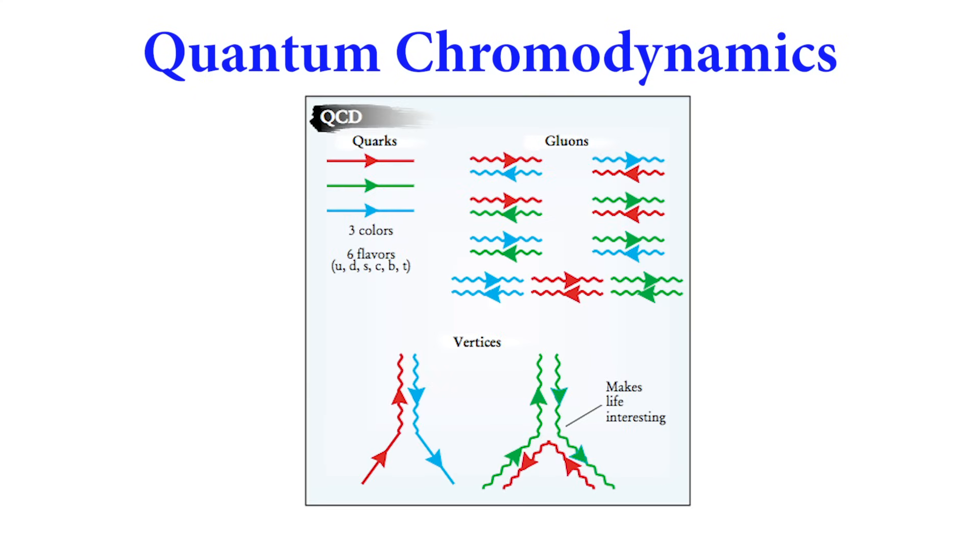There are three types of quantum color, called red, blue, and green, in analogy to the primary colors of visible light. All observable systems of quarks and gluons and their associated antiparticles found in nature are predicted in QCD to have equal amounts of red, blue, and green color. That is, they are colored white in analogy to visible light.